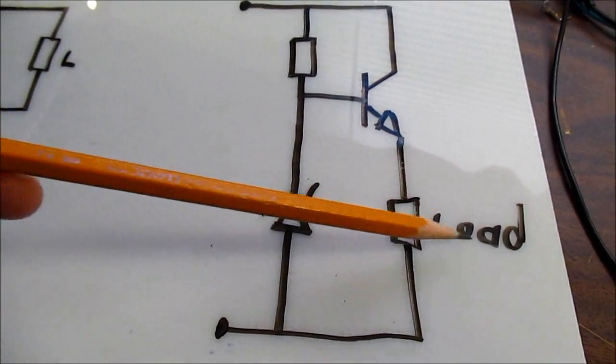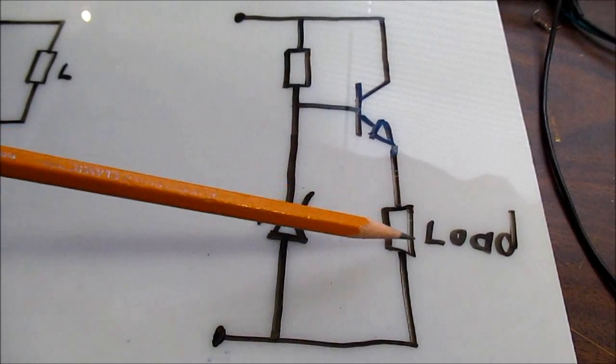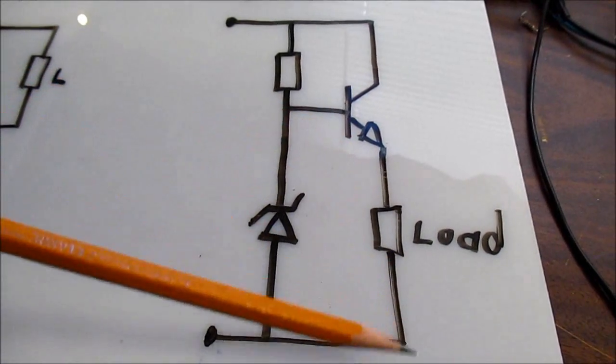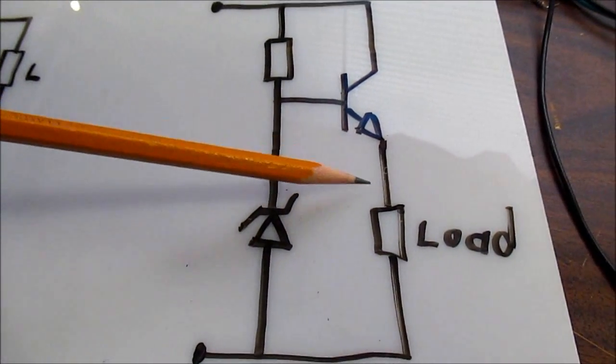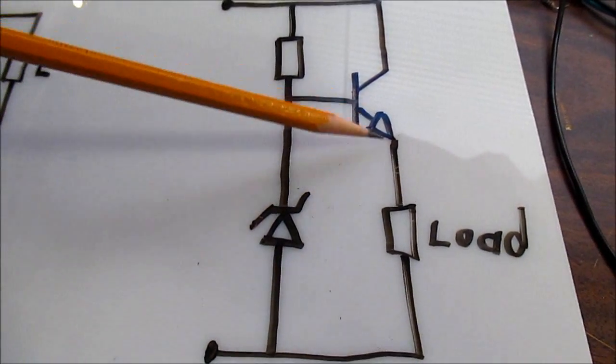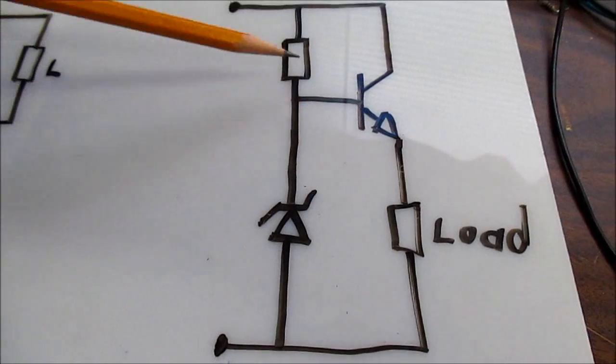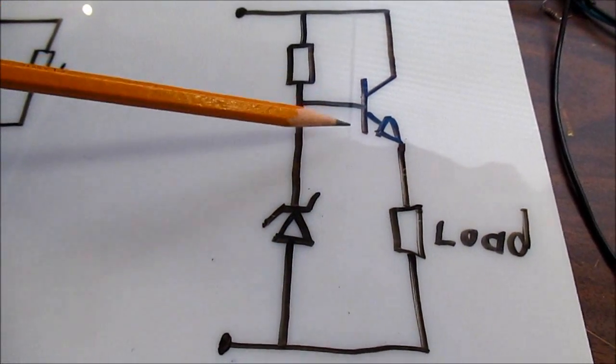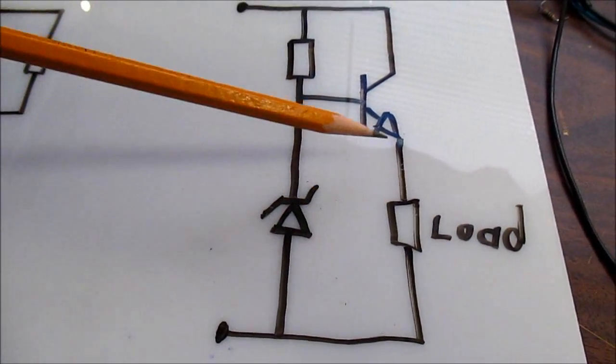But as the load increases, it draws more current. Think of it as a resistor that's lowering in value. It's going to want to cause this voltage to drop. It's going to draw more current. It's going to want this voltage to drop. So what happens is, since the transistor sits atop this load, this drawing more current is going to cause this voltage to try to become lower here. So more current is going to divert through the base-emitter junction. When that happens, the transistor is biased more. It turns on more and counteracts that. And the voltage remains the same.